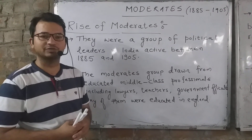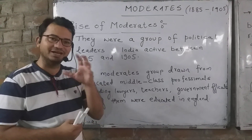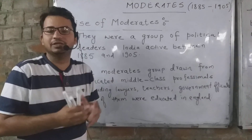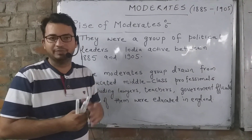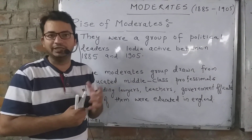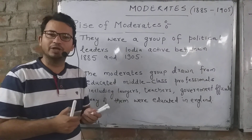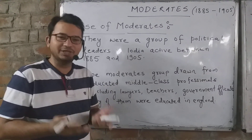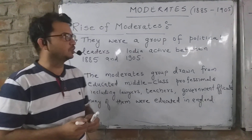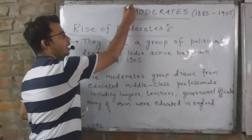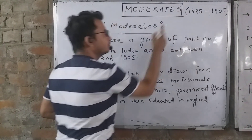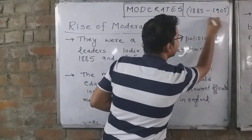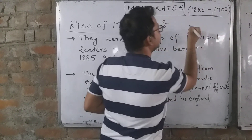Initially when the Congress was formed, the prominent ideology in the Indian National Congress was what we call the moderate ideology. The moderate phase is from 1885 to 1905 — this is very very important.